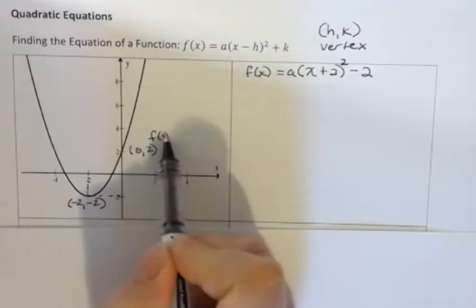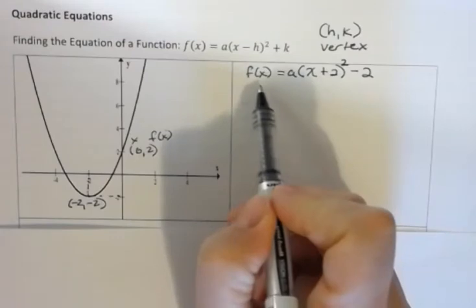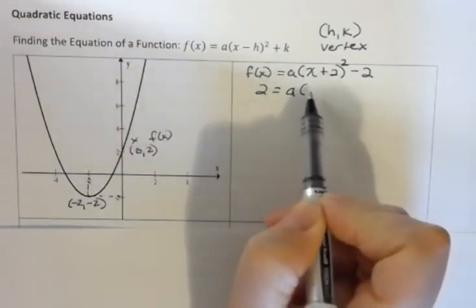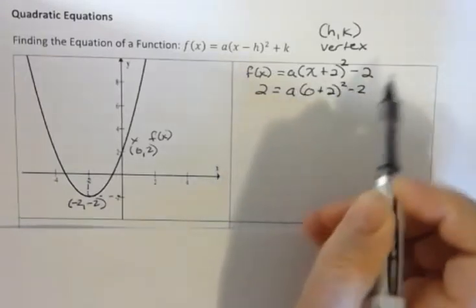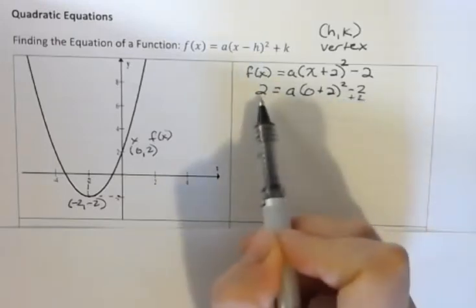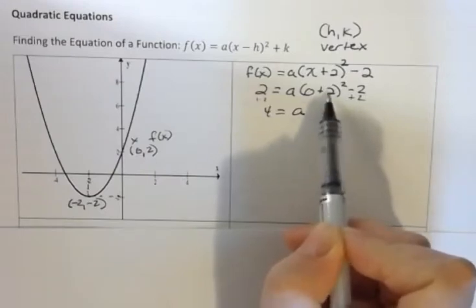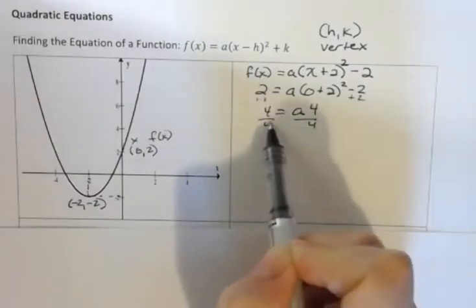0 is the y value or function value. This is the x value. So I can go back and replace f of x with 2, and then replace x with 0, and then solve that equation. So you can see if I add 2 to both sides, I get 4, and then 2 squared, 0 plus 2 is still 2. 2 squared is 4.